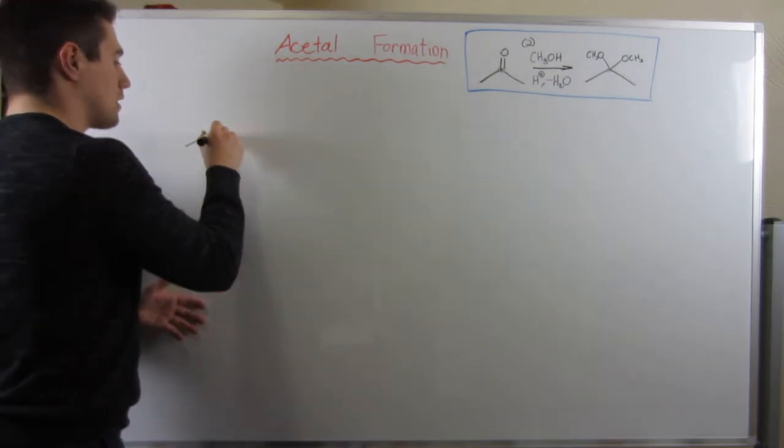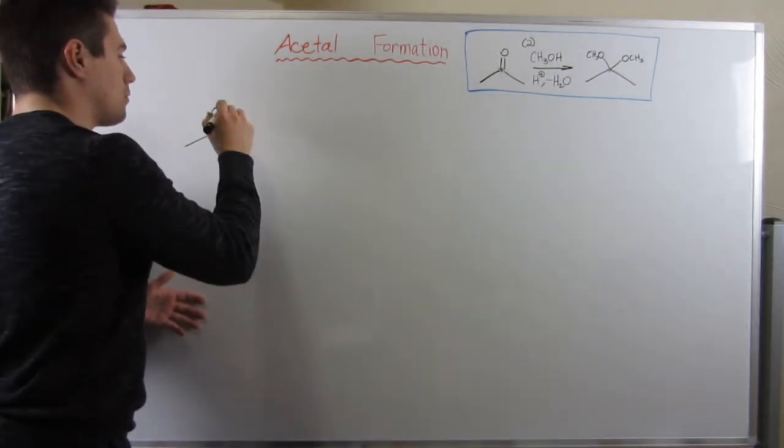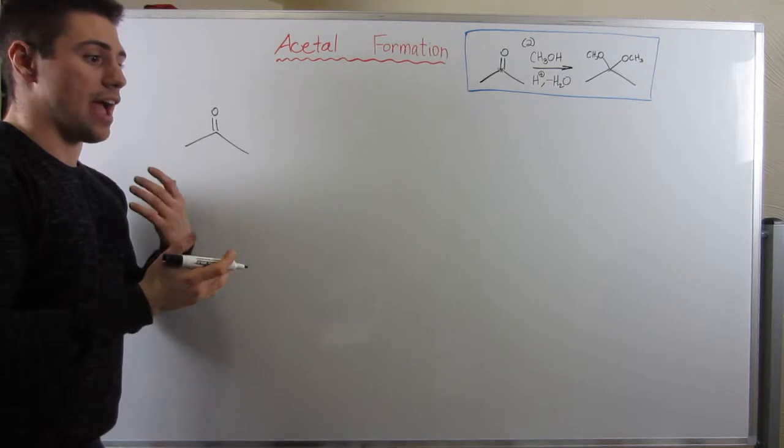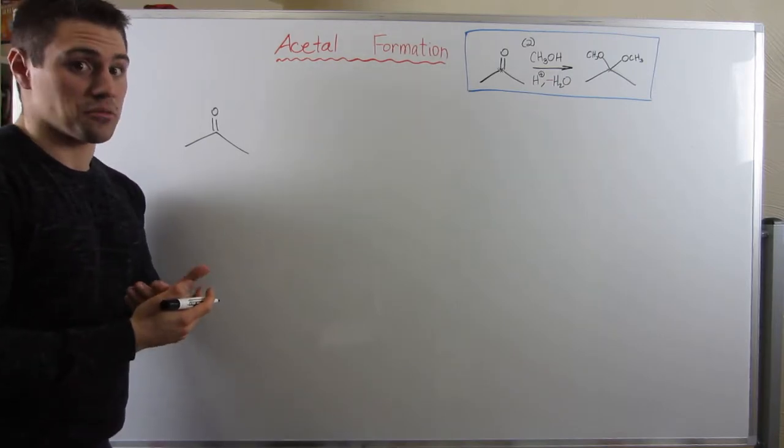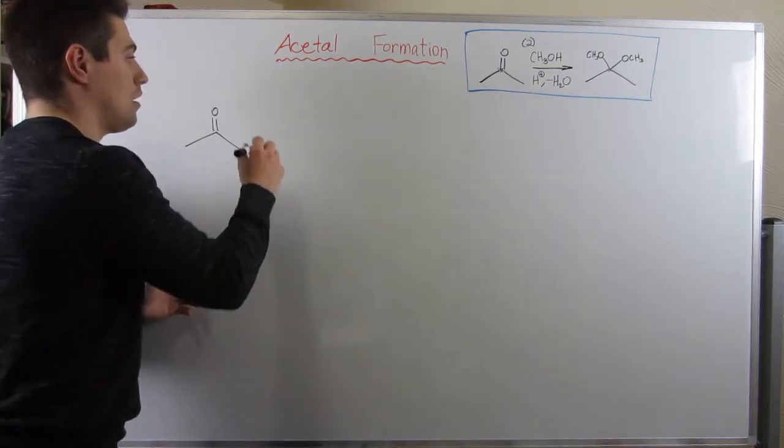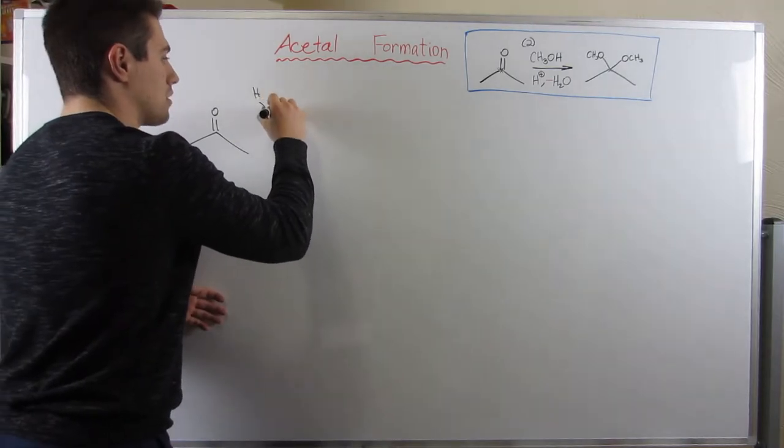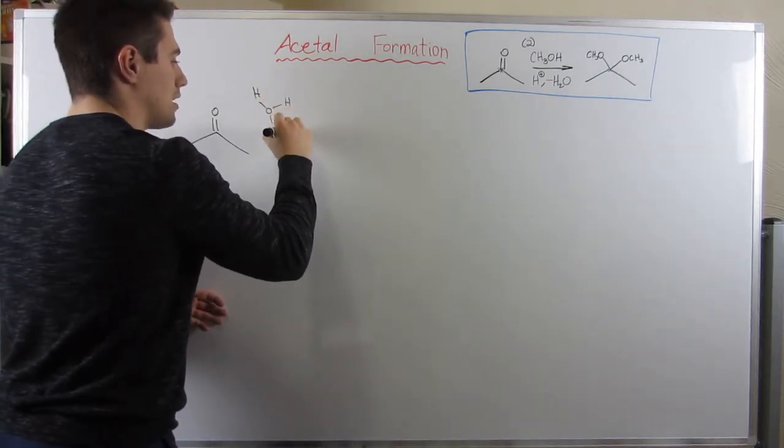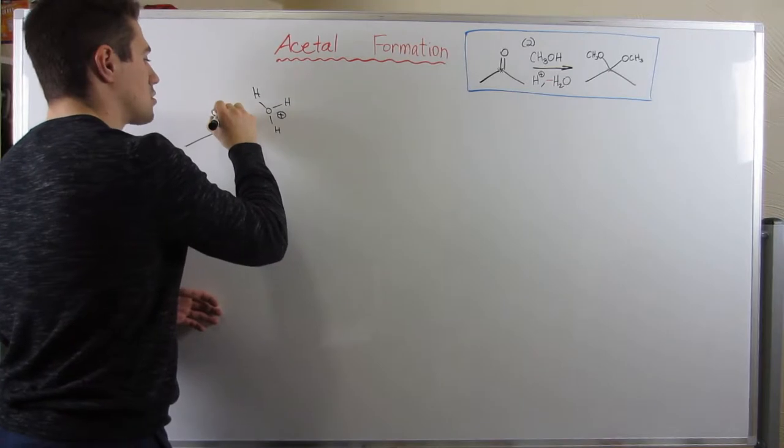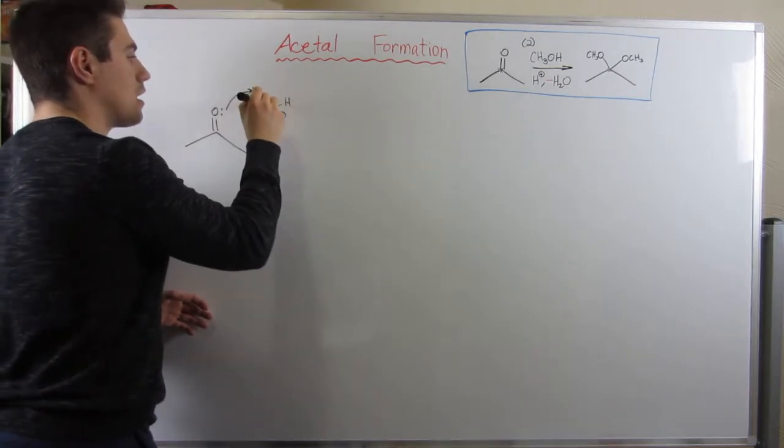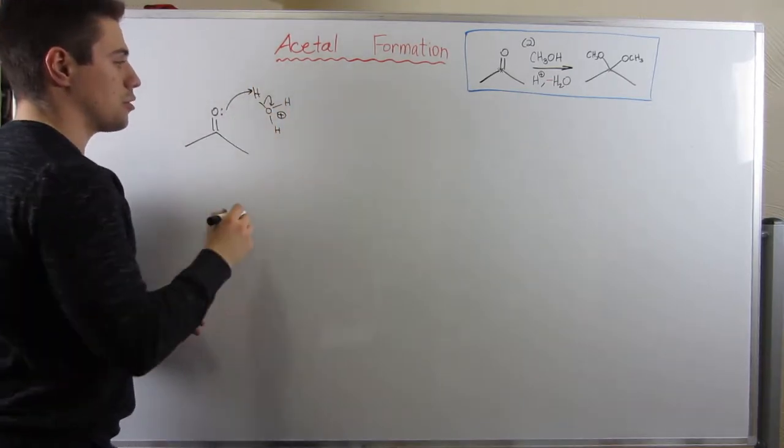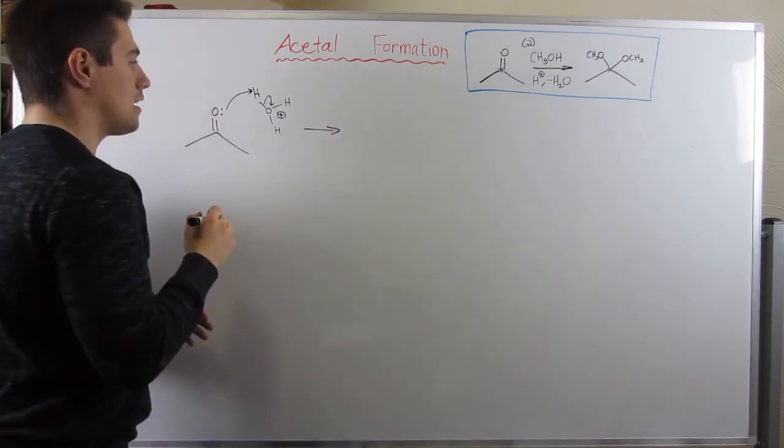So now, like I promised you, here's the point where you will get sick of every single time starting off a mechanism by protonating the carbonyl oxygen. Let's do it. I'll draw my hydronium. This electronegative oxygen is going to grab H+. Those electrons will go back on the oxygen, making water.